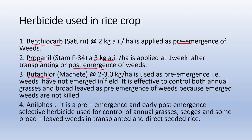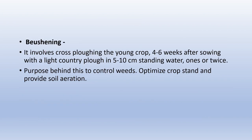Butachlor is applied at 2–3 kg per hectare as pre-emergence and is effective for controlling both annual grasses and broad-leaved weeds; it does not kill emerged weeds. Anilofos is a pre-emergence and early post-emergence selective herbicide used for control of annual grasses, sedges, and some broad-leaved weeds in transplanted and direct-seeded rice. Another method is beushening, which involves cross-plowing the young crop 4–6 weeks after sowing with a light country plough in 5–10 cm standing water once or twice. The purpose is to control weeds, optimize crop strength, and provide soil aeration.